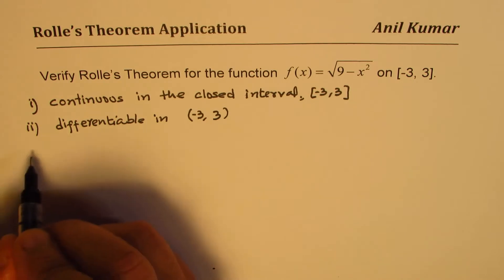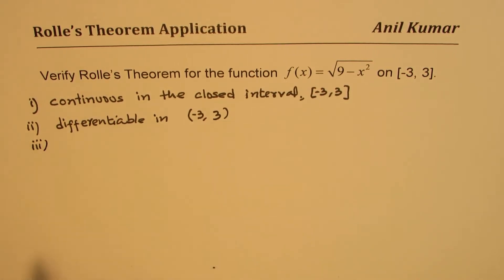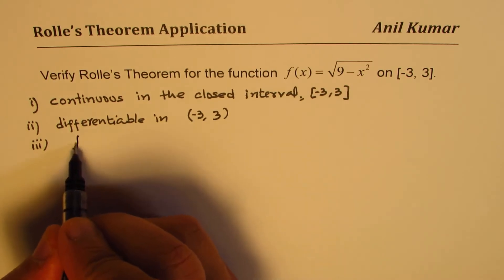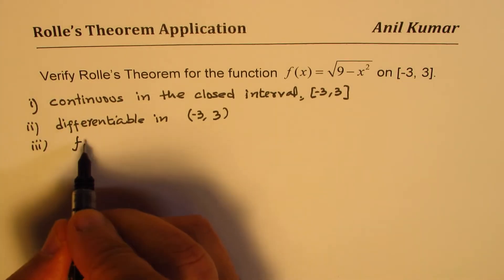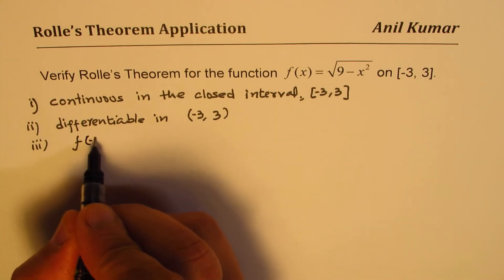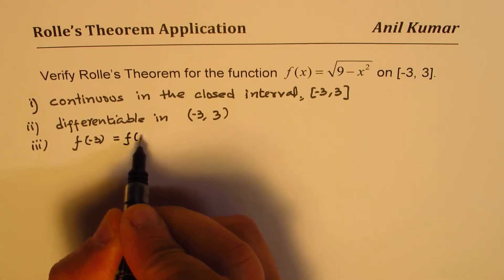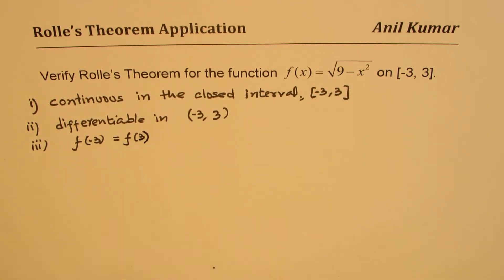And the third thing which you need to verify is that the value of the function at the two endpoints is the same. That is, f(-3) is equal to f(3). Now these three things you need to verify.